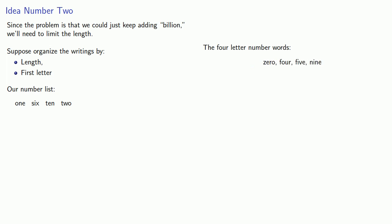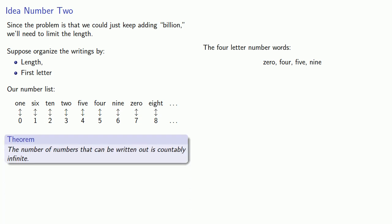Let's go on to the four-letter number words and put those in alphabetical order. And five-letter words, and so on. And we could put these in a one-to-one correspondence with the natural numbers. And since every written number is going to be someplace on this list, the longer the written word is, the further down the list it is, but every number that we can write is there. And so we can say the number of numbers that can be written out is countably infinite.